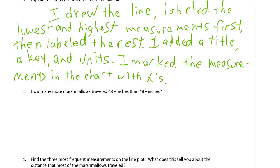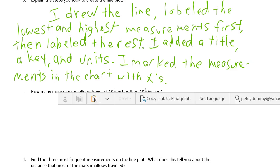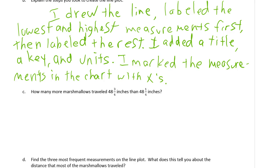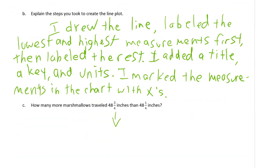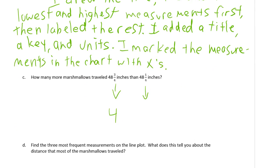How many more marshmallows traveled 48 and 3 quarter inches than 48 and 1 quarter inches? So we have to figure out both of those. 48 and 3 quarter inches, how many of those are there? There are 1, 2, 3, 4 of those. And then 48 and 1 quarter, there is 2 of those. So 4 minus 2 equals 2. 2 more traveled 48 and 3 fourths inches.